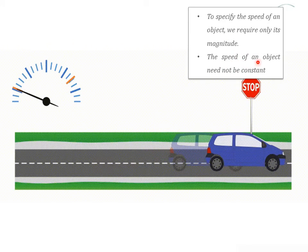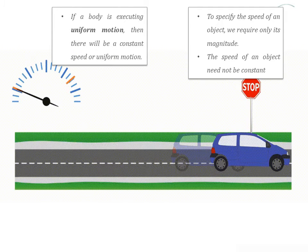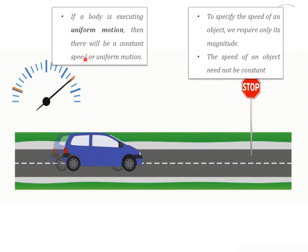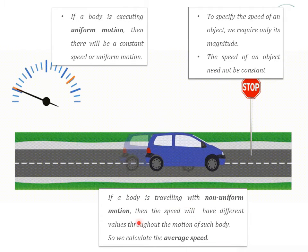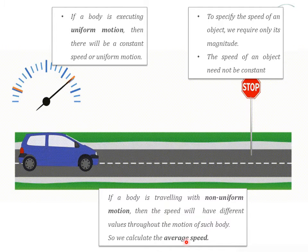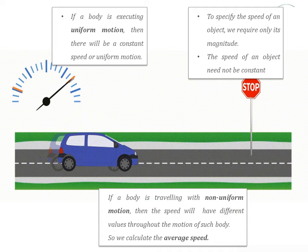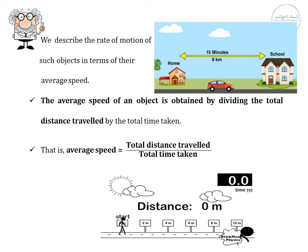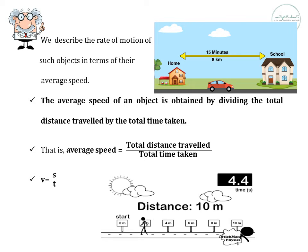The speed of an object need not be constant. If the body is executing uniform motion — that is, if it covers equal distance in equal intervals of time — then there will be a constant speed. Whereas if the body is travelling with non-uniform motion, the speed will be different, and we have to calculate the average speed. The average speed of an object is obtained by dividing the total distance travelled by the total time taken. That is: average speed = total distance ÷ total time taken, or v = s/t.